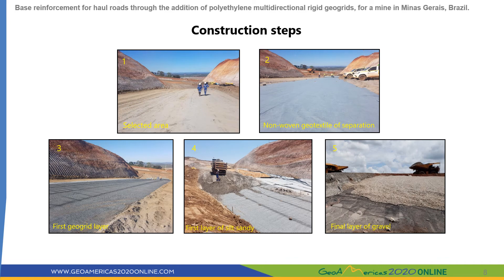Here we have pictures illustrating the construction steps. The first picture shows the selected area for the test. Between the foundation and the profile, it was necessary to first install a non-woven geotextile separation layer, illustrated in picture number 2, followed by the first geogrid layer. Above this geogrid layer we disposed 40 cm of silt sand material, then another layer of geogrid, and another layer of silt material. As a final coverage layer, we applied gravel, illustrated in picture number 5.